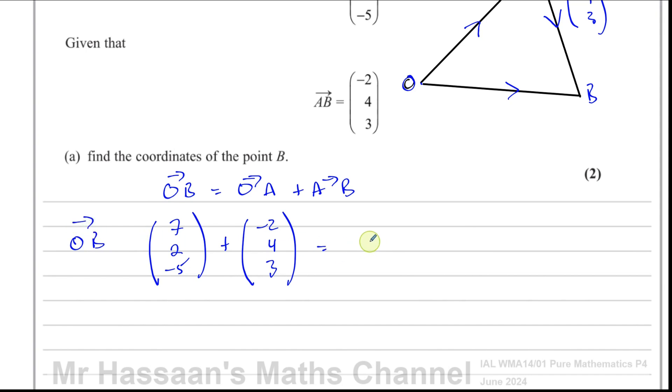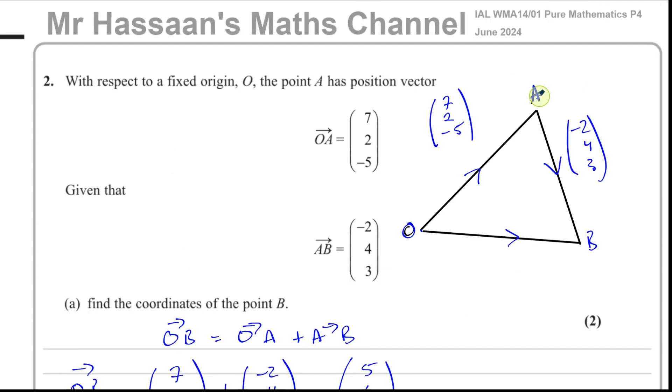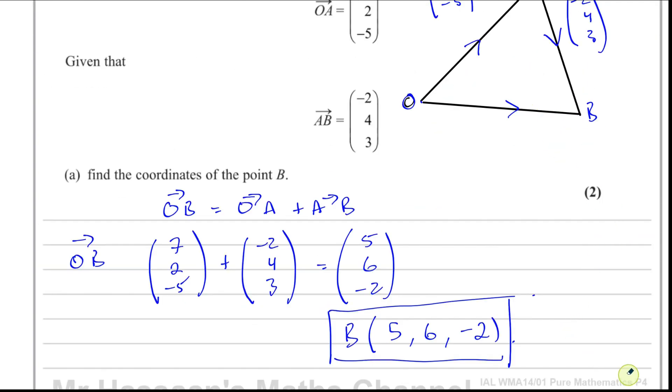That gives us our answer. The position vector is going to be 5, 6, negative 2. Therefore we can say the coordinates of the point B are just the same numbers but in coordinate form. That's the X, Y, and Z coordinate. There's the answer to question part A, nice and simple.